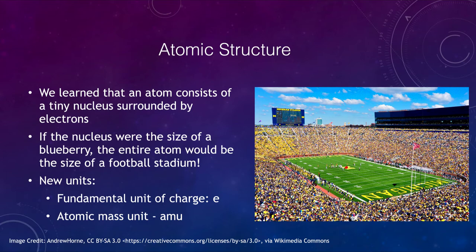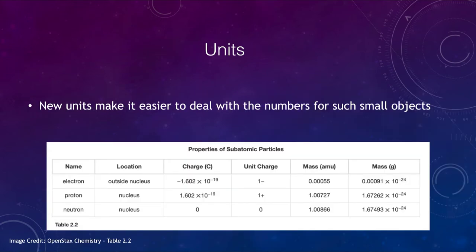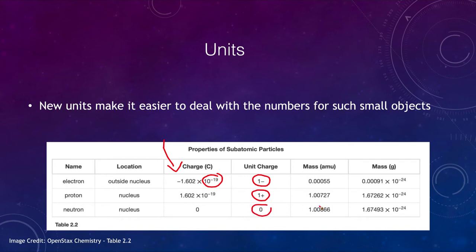We want to make up a couple of new units. We need the fundamental unit of charge, which is E — the charge on an electron. And we want to look at the atomic mass unit, which is the average mass of one nucleon, one particle in the nucleus of an atom. Because we are dealing with such small numbers: the electric charge is a very small number of coulombs — 10 to the minus 19. The unit charge is negative one for an electron, positive one for a proton, and zero for a neutron. The masses given in grams at 10 to the minus 24th power are also very tiny.